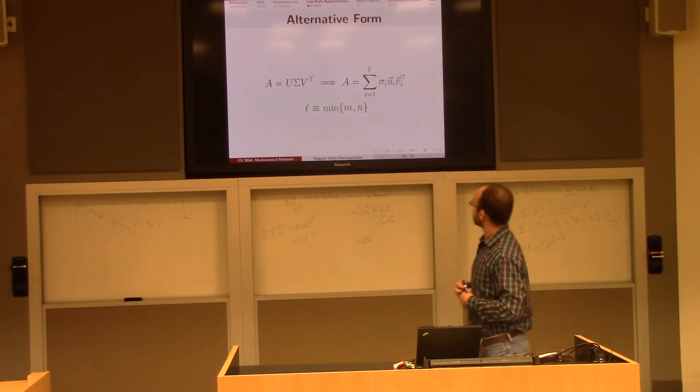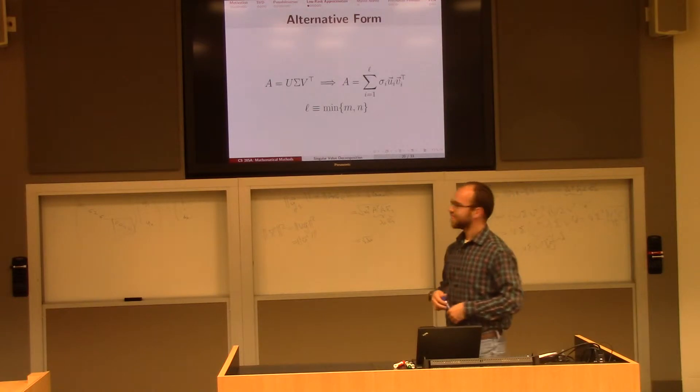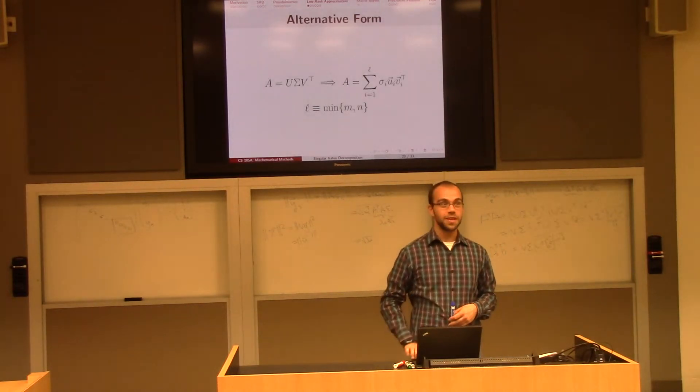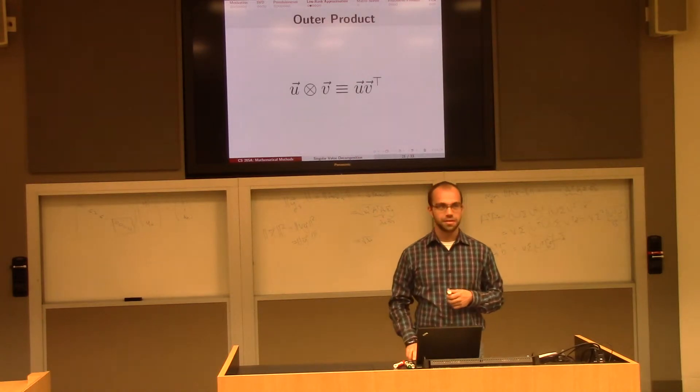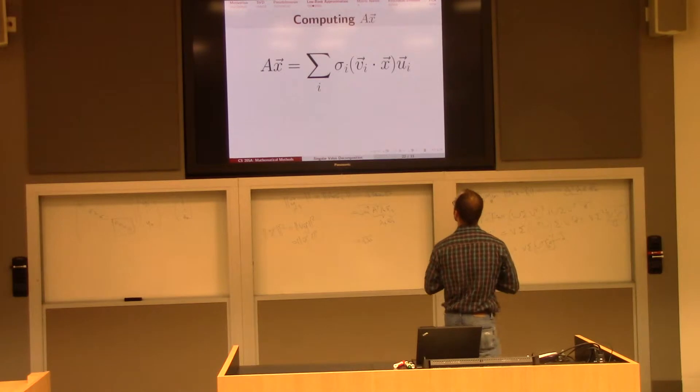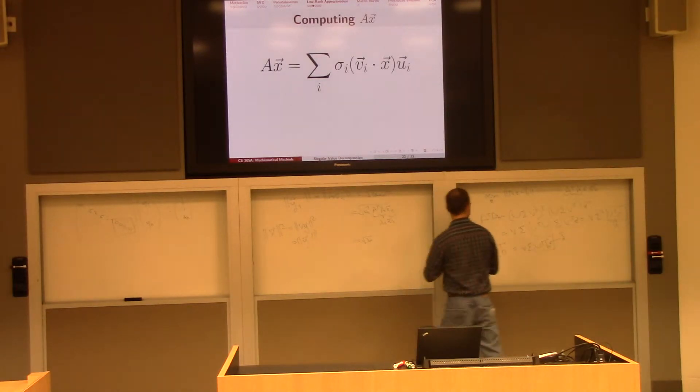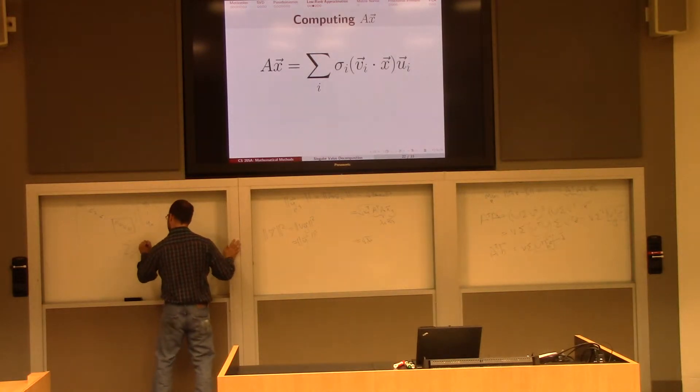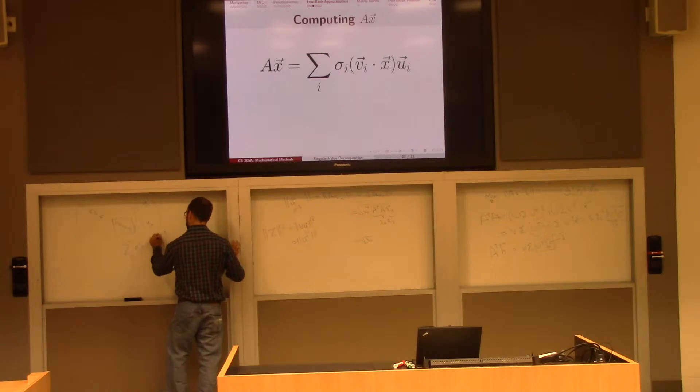So this matrix is ui vi transpose. This is a matrix. Remember, v transpose is a dot product, u v transpose is called an outer product. It was a trivia fact of the day. And if you think about it, originally I wrote this is the sum over i, sigma i, u v transpose i.